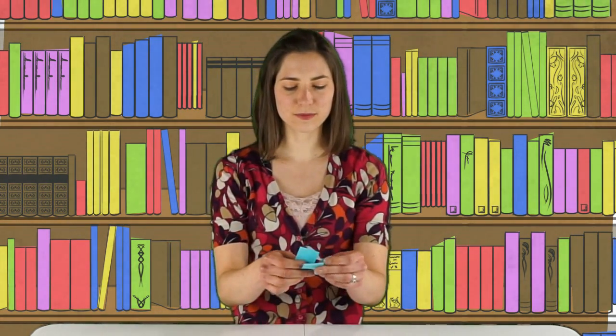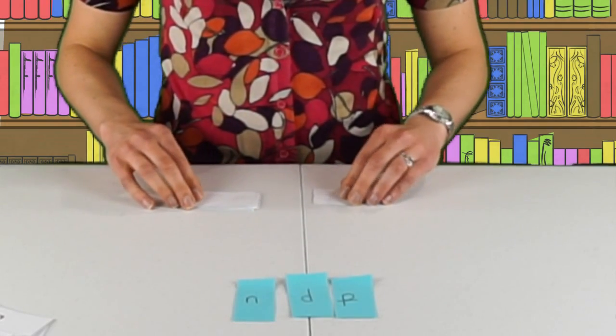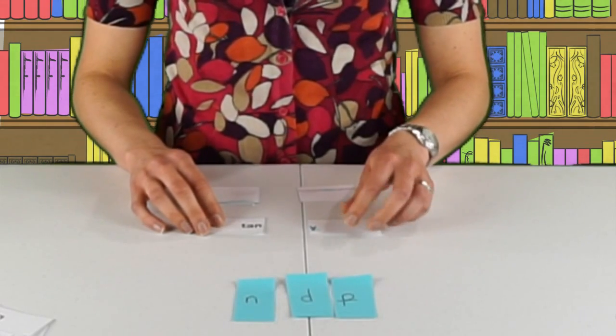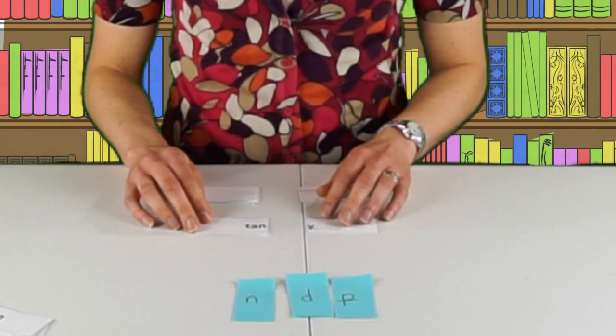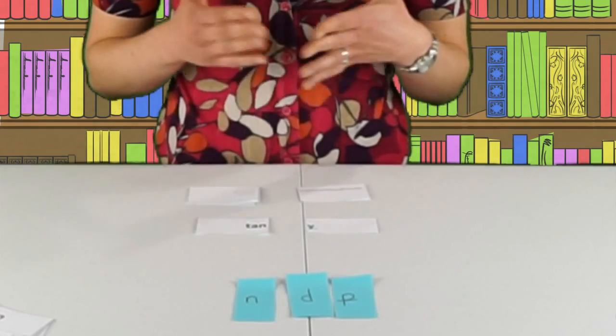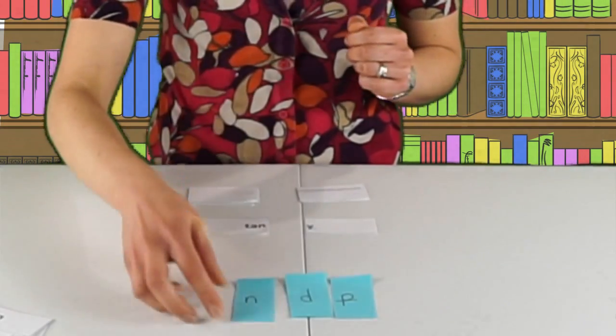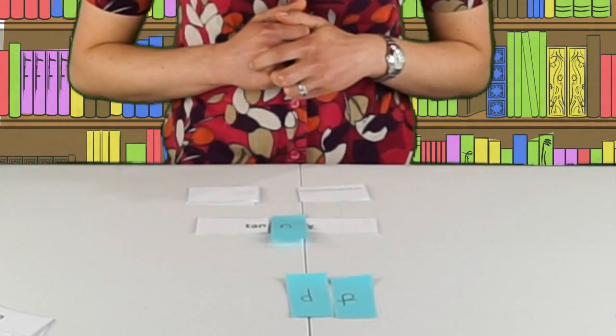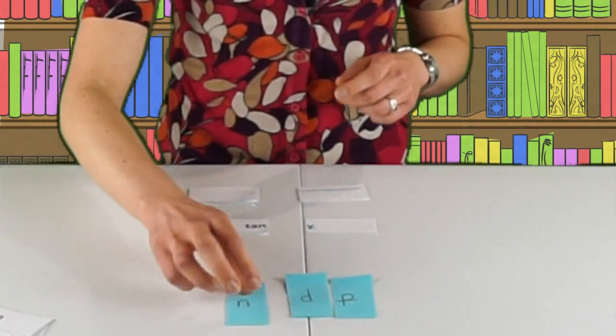Now I have my suffixes that the rule applies to. For the next part of the activity, you'll have your base words and suffixes in two different piles — go ahead and put those face down. You'll also need some post-it notes. Students are going to flip over a base word and a suffix and read them. This one is 'tan' plus 'e' — it follows my one-one-one doubling rule, so I put in the double letter: 'tanny.' These aren't going to be real words.